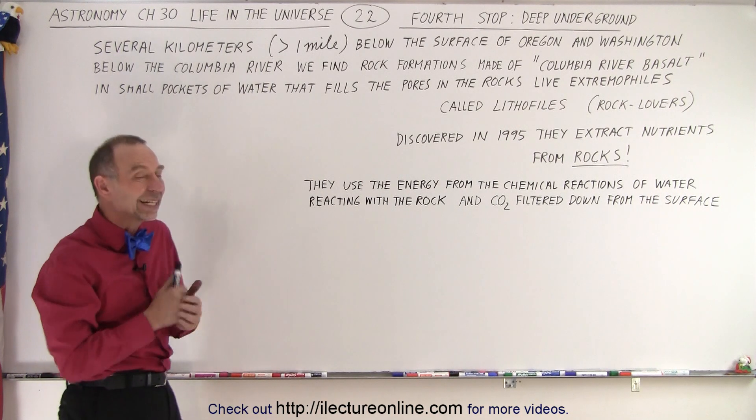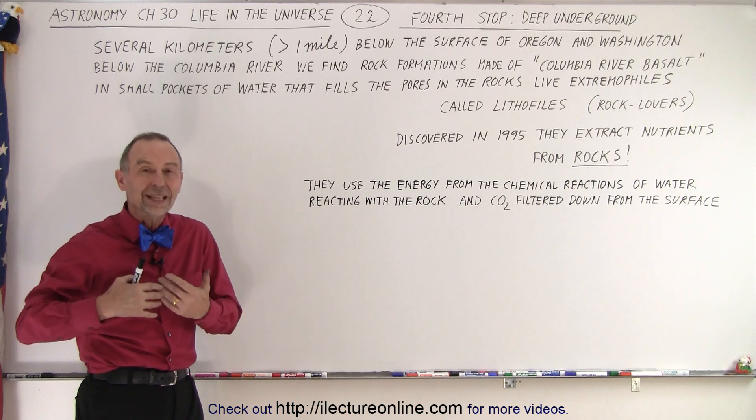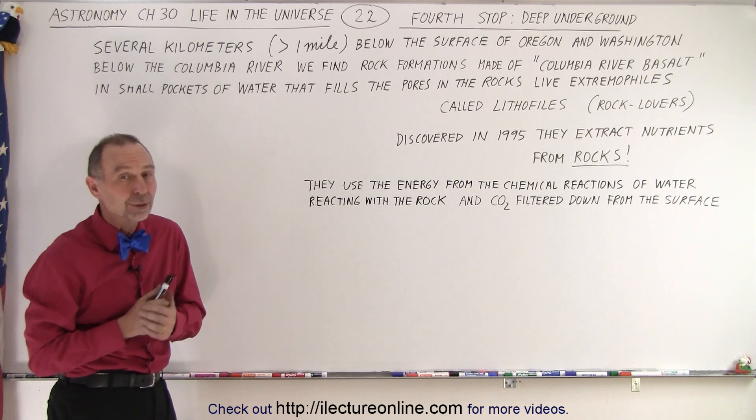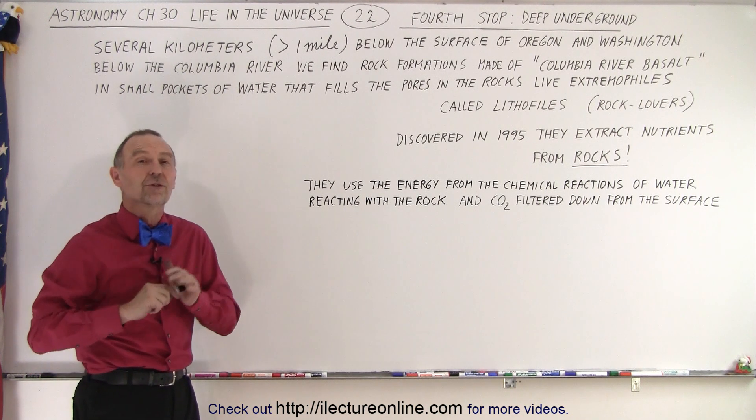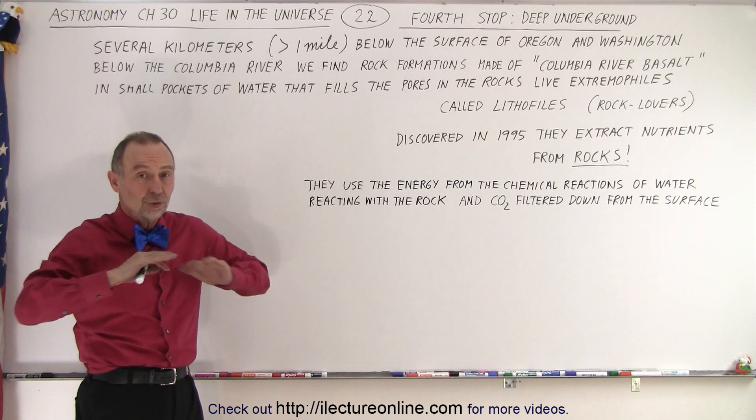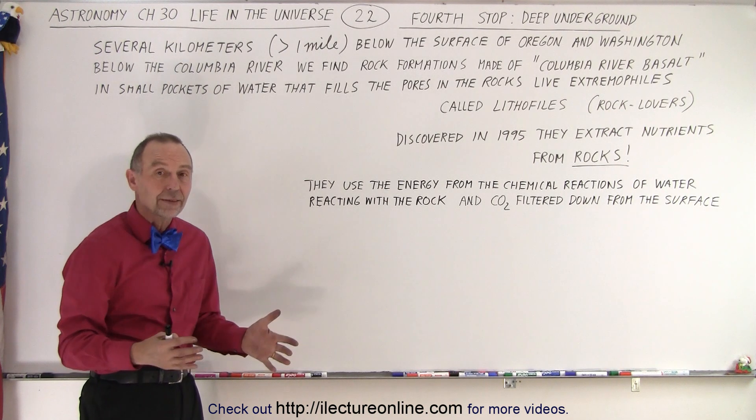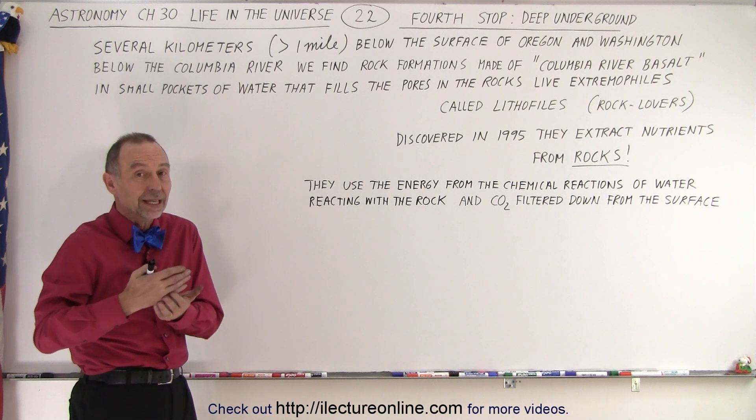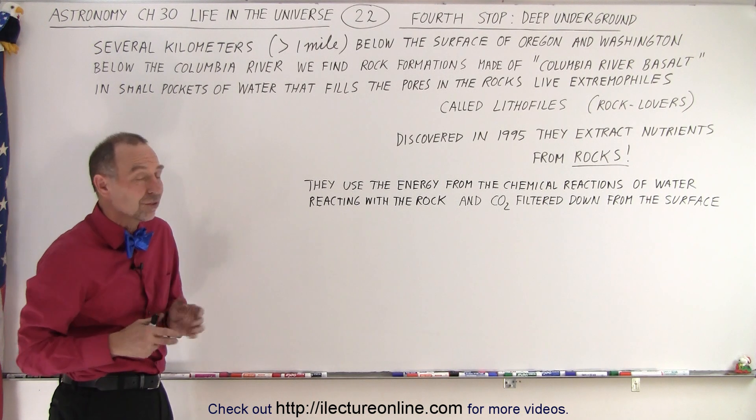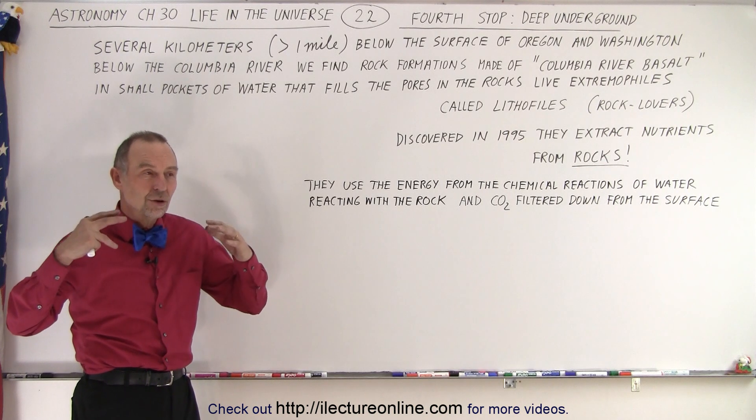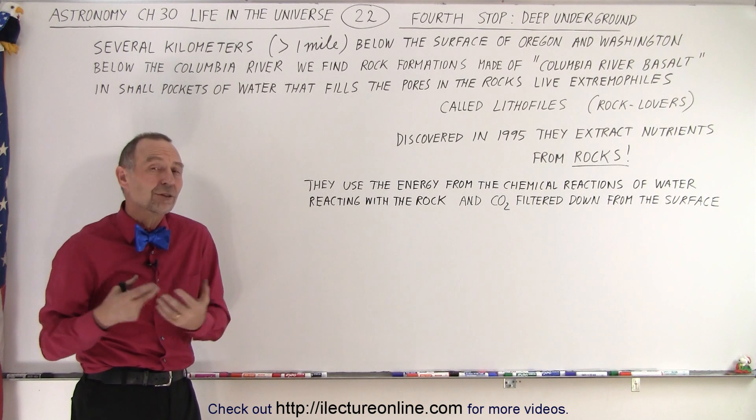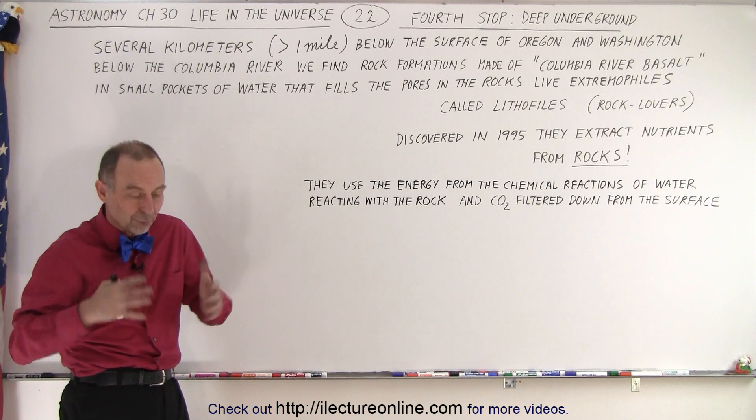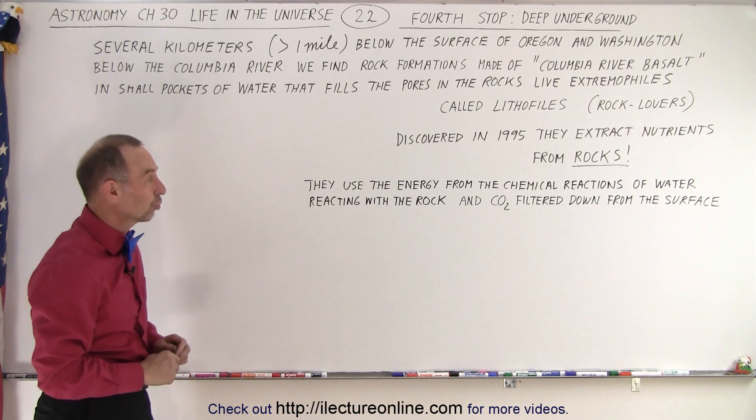They were discovered in 1995 and it gave us new hope that similar kind of life forms may be able to be found below the surface of Mars because Mars has subsurface water, it has rocks down there, and potentially there could be life forms like that that could be doing the very same things. We know that once upon a time Mars was a much more hospitable place for life and perhaps some of these types of life forms survived far down below the surface.